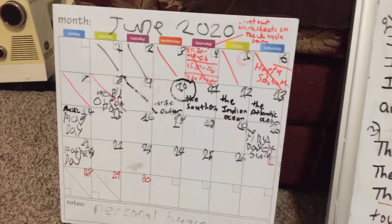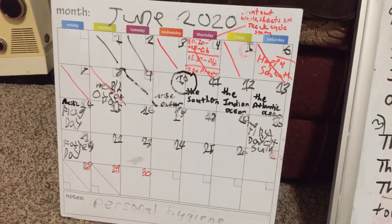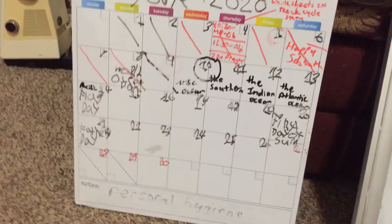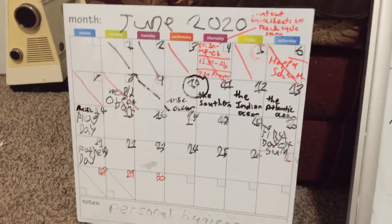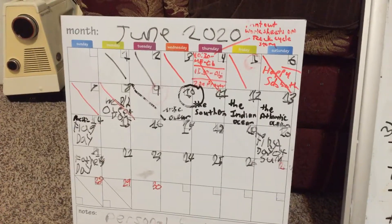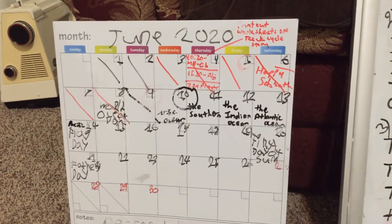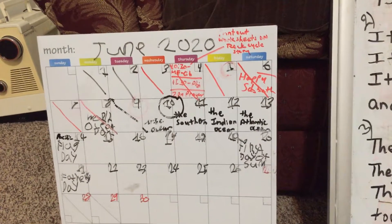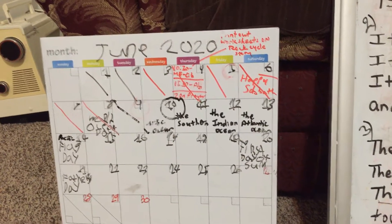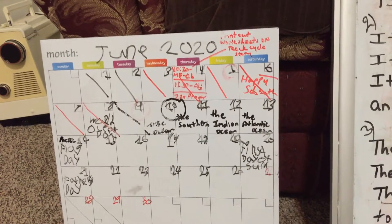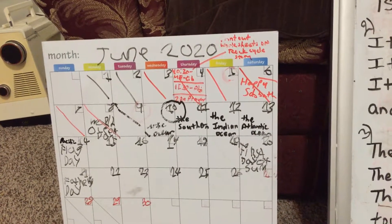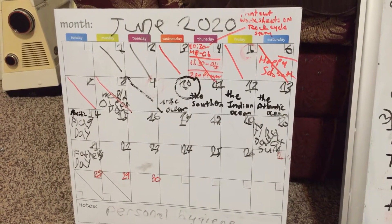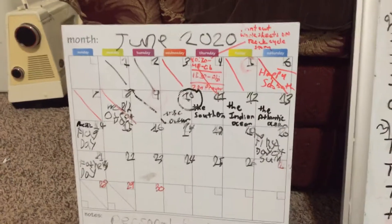June 8th, as you can see on the calendar here, was World Ocean Day. I did not see it as a special day, but my daughter when she was putting this calendar together saw it on the calendar.